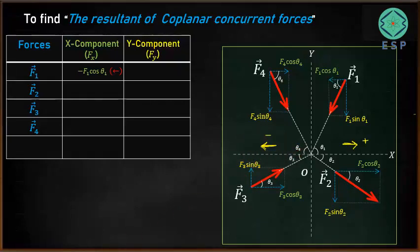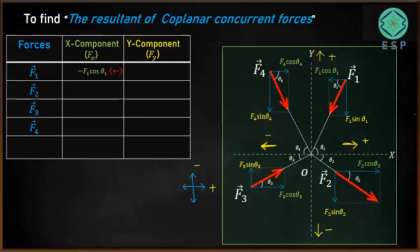Similarly for the Y direction: if the force acts upward, that is in the positive direction of the Y axis, it is taken as positive. If it is acting downward, that is in the negative direction of the Y axis, it is taken as negative. So forces to the right and upward are positive; forces to the left and downward are negative. This is the sign convention we are going to follow.